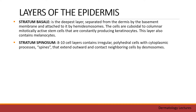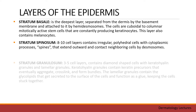Stratum spinosum consists of 8 to 10 cell layers, containing irregular polyhedral cells with cytoplasmic processes called spines that extend outward and contact neighboring cells by desmosomes.